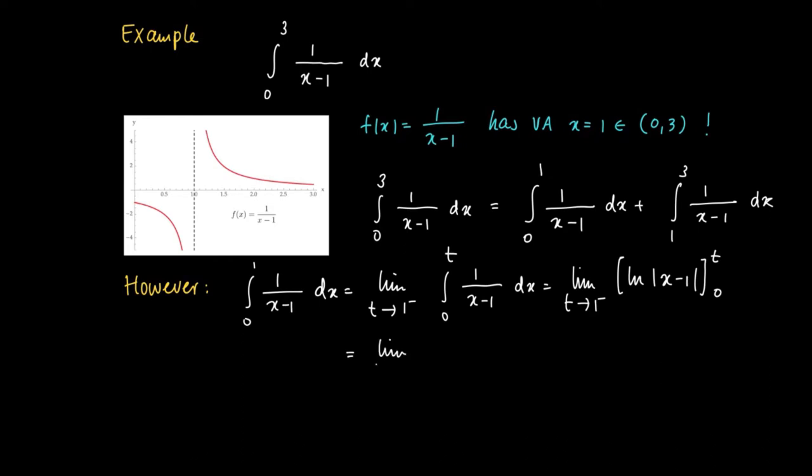And the bounds are given by 0 and t. So what we get is the limit for t to 1 minus of ln absolute value of t minus 1, minus 0.